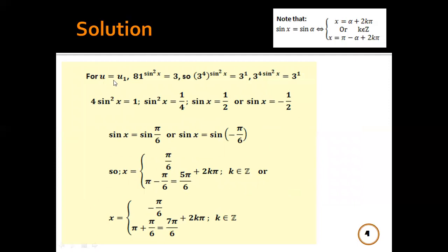First, for u = u₁: 81^(sin²x) = 3. But 81 = 3⁴, so we get (3⁴)^(sin²x) = 3¹. Multiplying the two powers gives 3^(4sin²x) = 3¹. Same base.